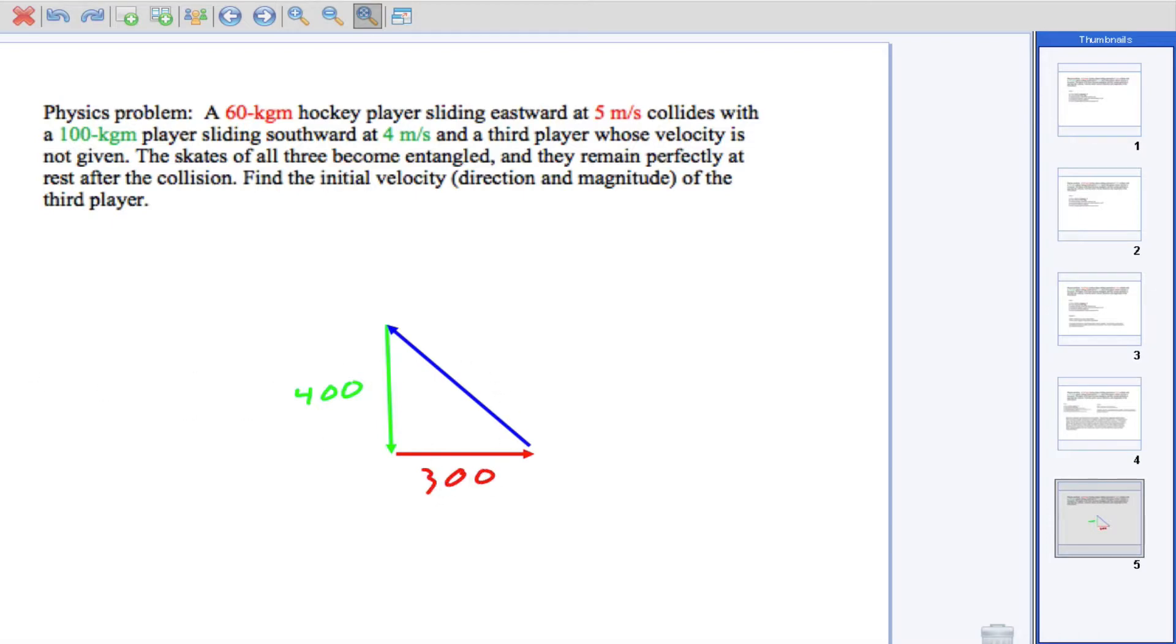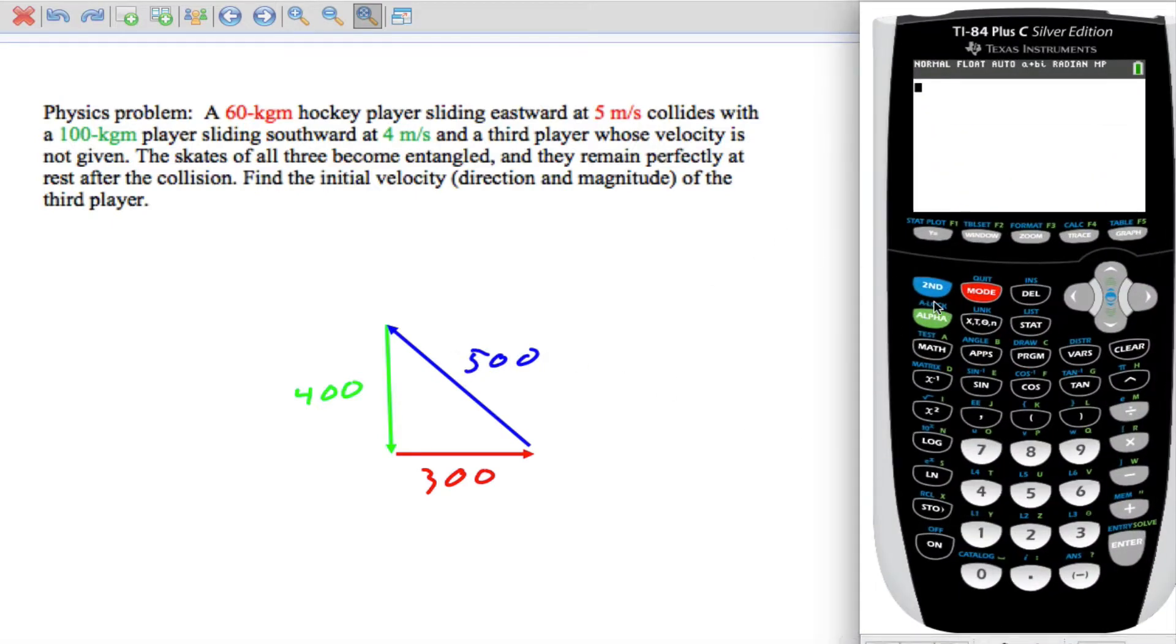So to find our third side, which is going to be 500, but let's see how we do that with the calculator. We would take 400 squared plus 300 squared, and that is going to equal the last side squared, Pythagorean's Theorem. a squared plus b squared equals c squared. So 400 squared plus 300 squared has to equal 500 squared. What we'll do is we'll just take the square root of the answer. I get 500.